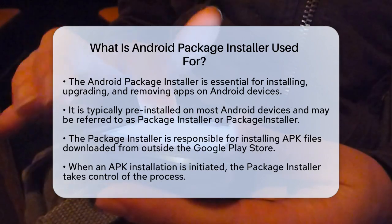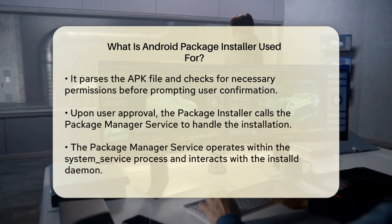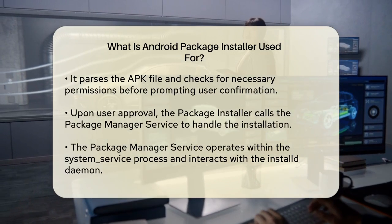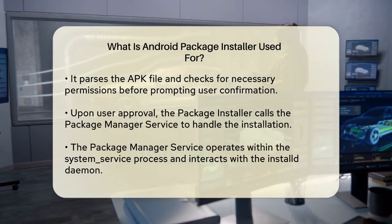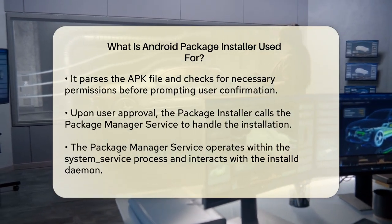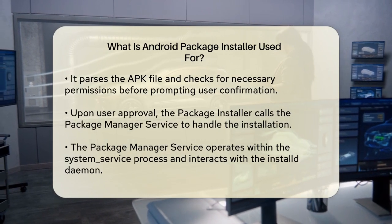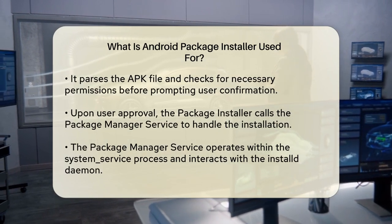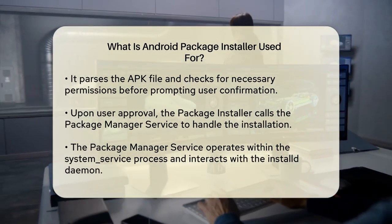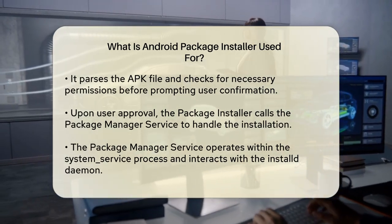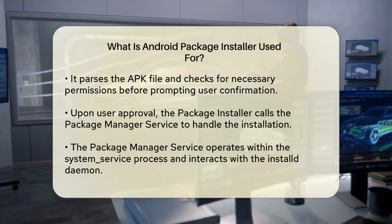Here's how it works. When you initiate the installation of an APK, the Package Installer app takes over. It parses the APK file, checks for any necessary permissions, and then prompts you to confirm the installation. Once you press the OK button, the Package Installer calls the Package Manager service, which handles the actual installation process.